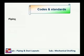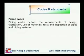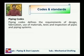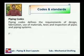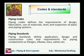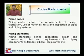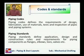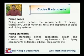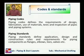The first is codes and standards. What do you mean by piping codes and standards? Piping codes define the requirements of design, fabrication, use of materials, tests and inspection of pipes and piping systems. Piping standards define application, design and construction rules and requirements for piping components such as flanges, elbows, tees, valves, etc. How many pipes, flanges, and elbows are required to connect certain pipelines is defined in piping standards. Material of pipe, inspection parameters, and testing methods are defined in piping codes.